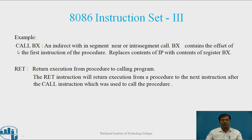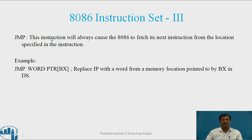Example for CALL: CALL BX — an indirect intra-segment (near) call where BX contains the offset of the first instruction of the procedure, replacing the content of IP with the content of register BX. Next is RET — it returns execution from a procedure to the calling program, specifically to the next instruction after the CALL. Next is JMP — this instruction always causes the 8086 to fetch its next instruction from the location specified. Example: JMP WORD PTR [BX] — replaces IP with the word from the memory location pointed to by BX in DS.